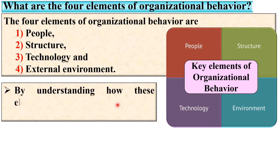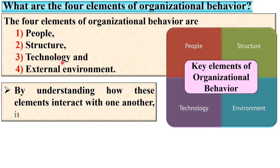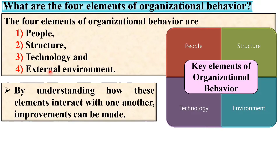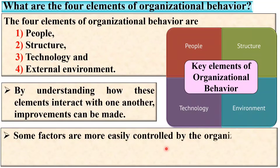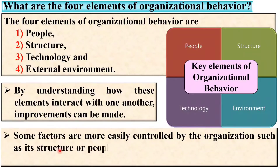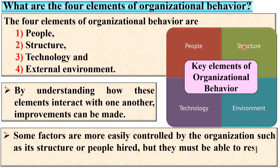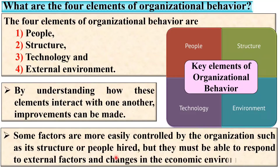By understanding how these four elements interact with one another, improvements can be made. Some factors are more easily controlled by the organization, such as its structure or people hired, but they must also be able to respond to external factors and changes in the economic environment.